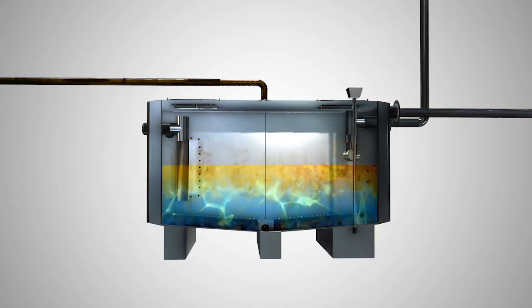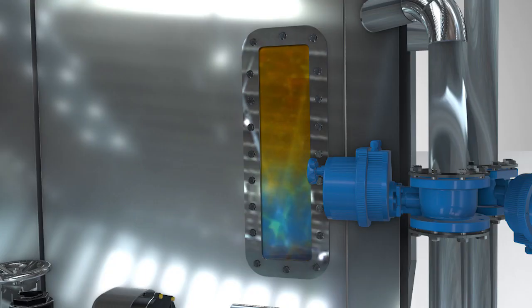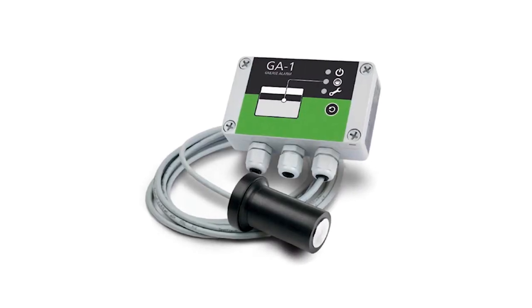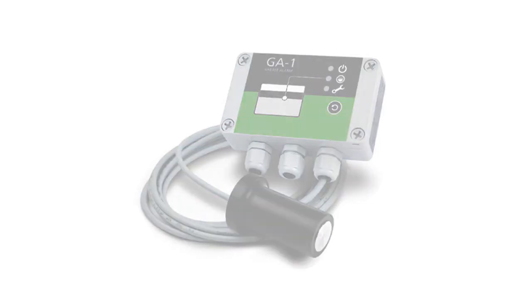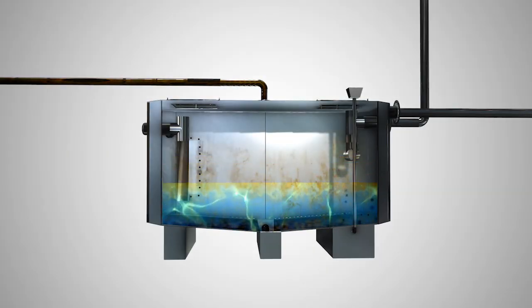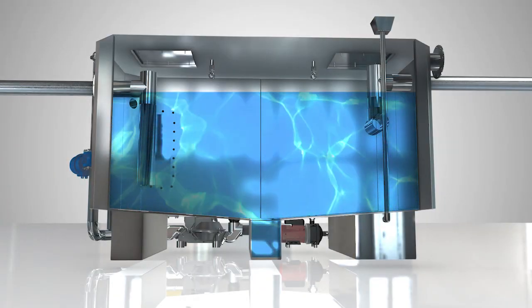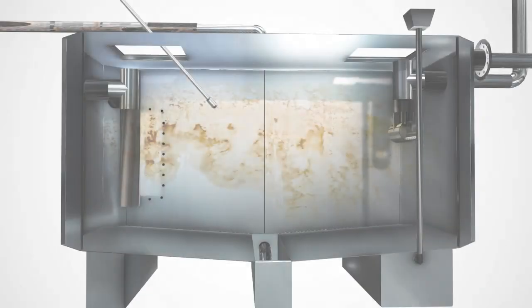The entire tank should be emptied when the grease storage capacity is reached. This can be checked from the inspection window available on all models as standard, by using the optional level sensor with alarm, or by simply keeping to the once a month recommendations under the EN 1825 standard. It is important to refill the unit with fresh water once the desludging and washing operation is completed.